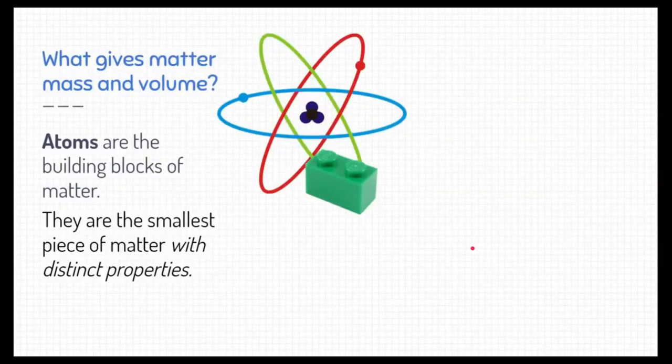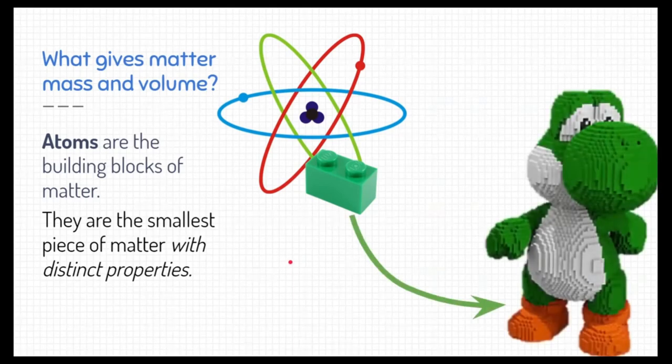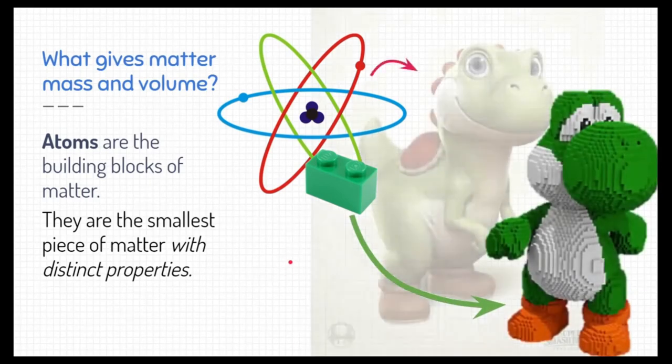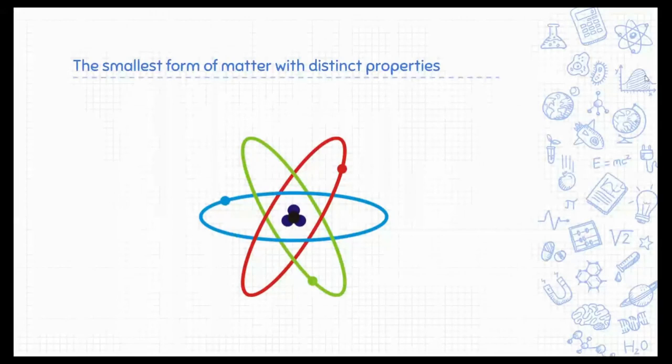Alright, so what gives matter mass and volume? Well, atoms. Atoms are the building blocks of matter. I like to think of atoms as the Legos of matter. Well, what are Legos good for? Well, you can build tons of stuff with Legos. Same thing with atoms. Anything that's made out of matter or anything that is matter is made out of atoms. They're the smallest piece of matter with distinct properties.